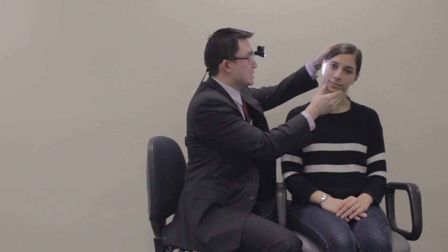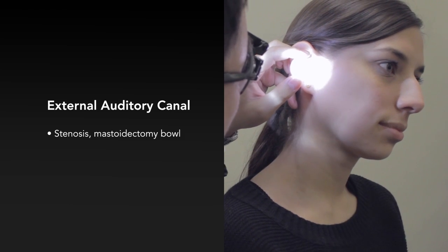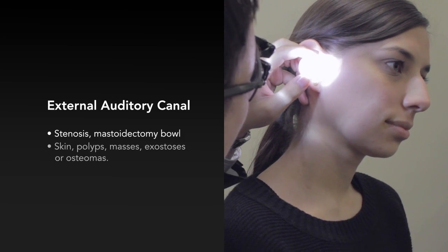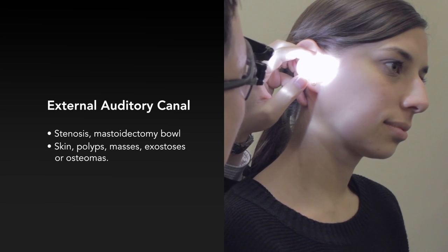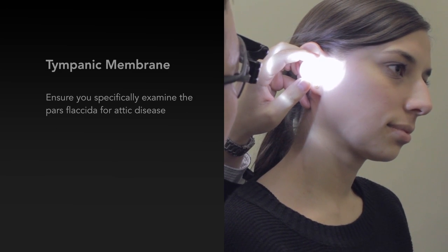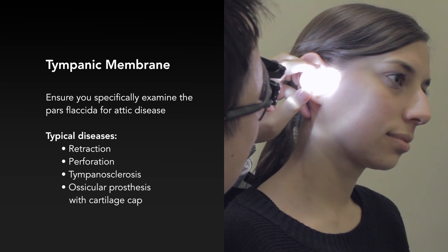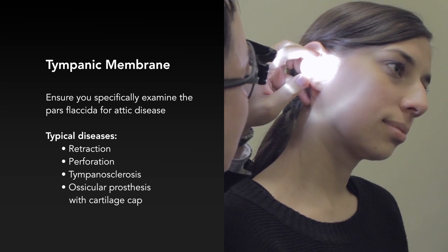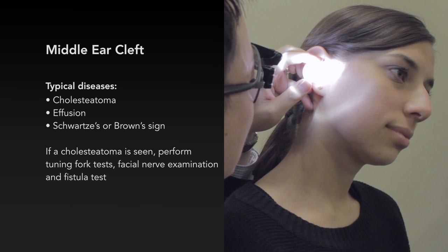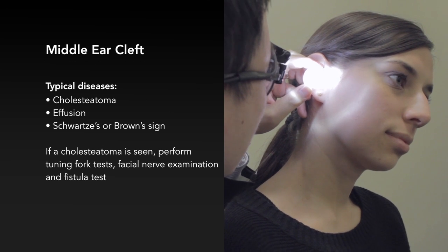Tilting the head away to examine the external ear canal, we choose the largest speculum. The external ear canal is normal — there are no osteomas, no obstructing lesions, and the skin is normal. Moving on to the tympanic membrane, the pars tensa is normal, and tilting the head further away the pars flaccida is normal. There is no evidence of retraction pocket, no masses, and no Schwartz's sign.